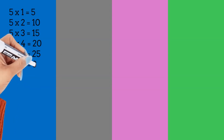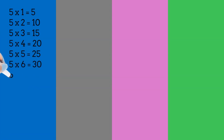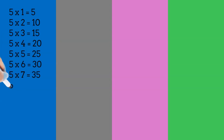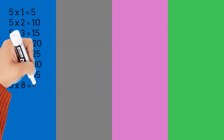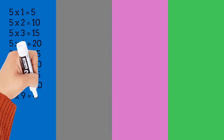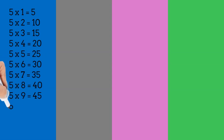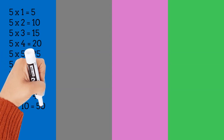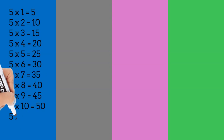5 times 6 is equal to 30. 5 times 7 is equal to 35. 5 times 8 is equal to 40. 5 times 9 is equal to 45. 5 times 10 is equal to 50.